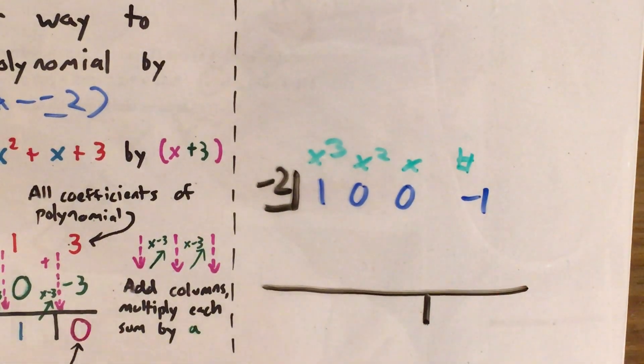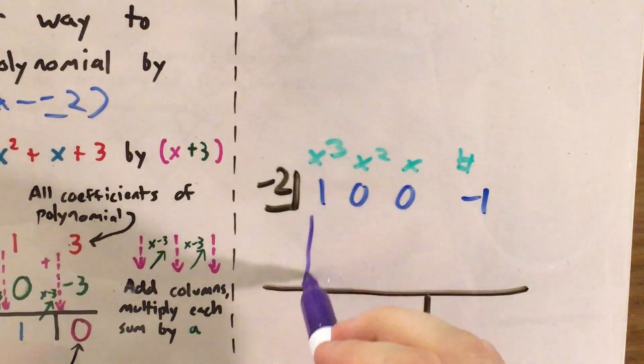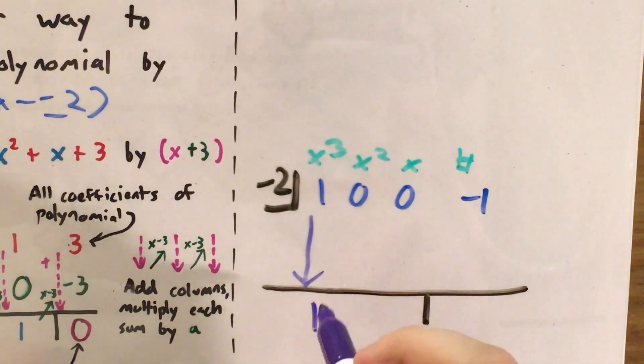So if I come over here and do this, I'm going to add as I go down this column. So 1 plus nothing equals 1.